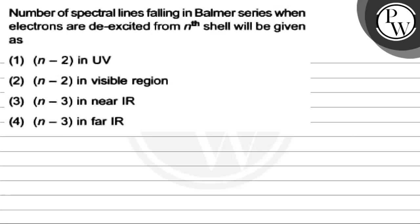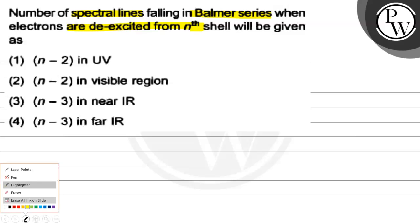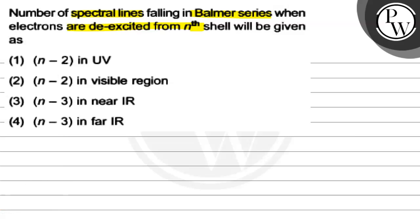Let's read this question: number of spectral lines falling in the Balmer series when an electron is excited from the nth shell will be given as — and we have four options. We have to find the correct option. The key concept one can use is basically the Balmer series.